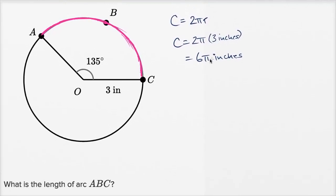So the entire circumference is 6π inches, but this arc length isn't the entire circumference. It only goes 135 degrees out of 360 degrees. So it is 135/360th of the entire circumference. Remember, if we were to go all the way around, that's 360 degrees, while this angle right over here is 135 degrees, the angle that is subtended by this arc. So this arc length is going to be 135/360 times 6π inches.